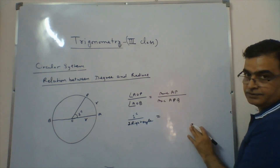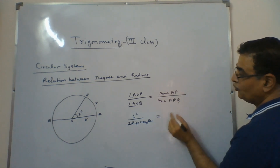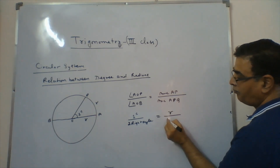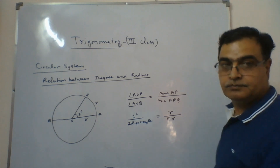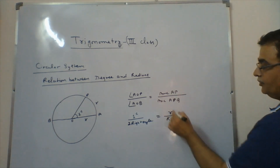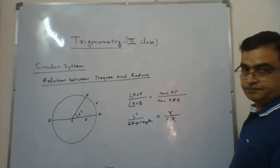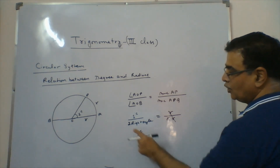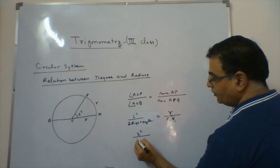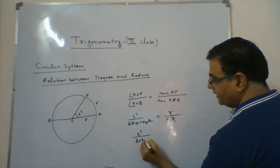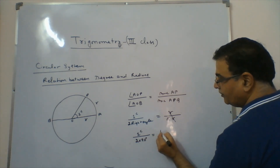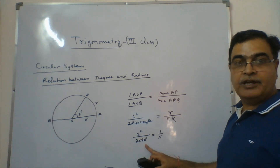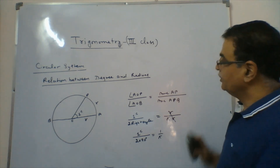Angle AOP is one radian. Angle AOB is two right angles. Arc AP equals r (small r) and arc AB equals πr. The r's cancel out, so we get: one radian divided by two right angles equals 1/π. Two right angles means 2 × 90 degrees, which is 180 degrees.